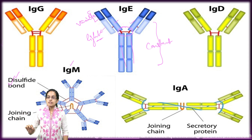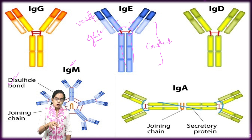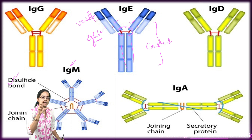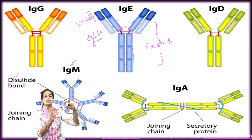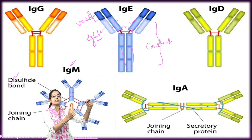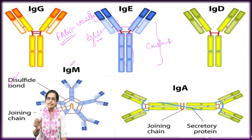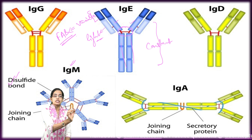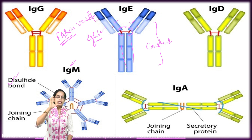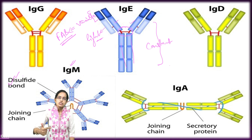Immunoglobulin M is very unique because it has 10 spikes, making IgM very different from other antibodies. On the top, the variable section has a fragment antigen binding (FAB) region that binds to the antigen with very high specificity — if the pathogen is COVID-19, it binds specifically to COVID-19. The constant region includes the fragment crystallization (Fc) region, which circulates among white blood cells and natural killer cells in the body.